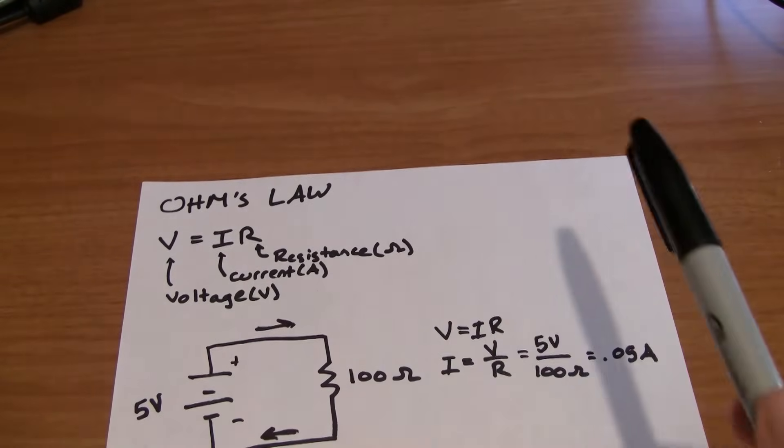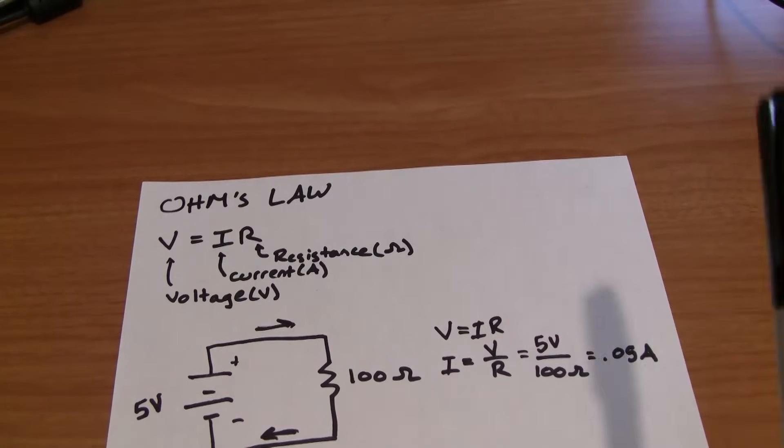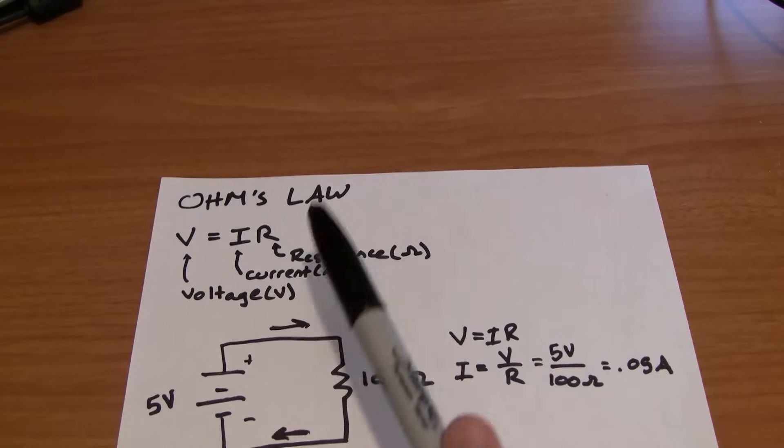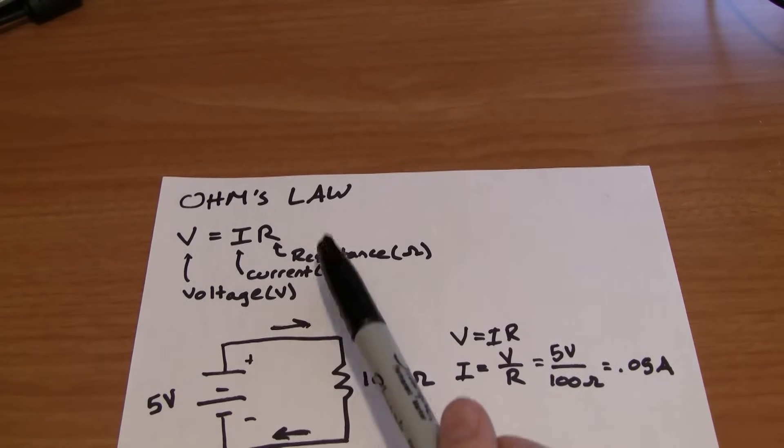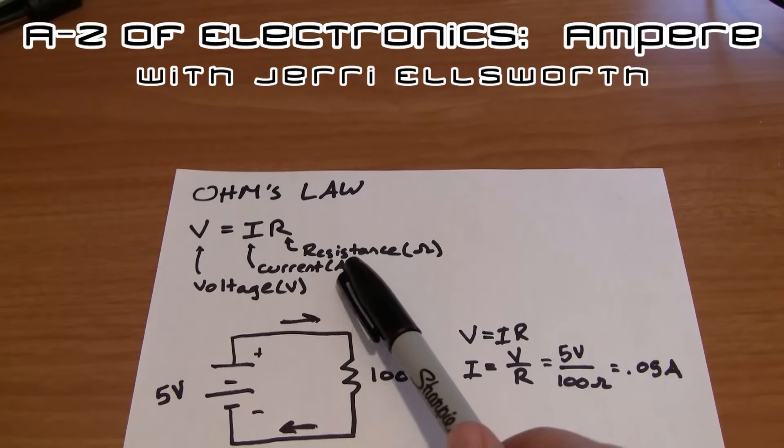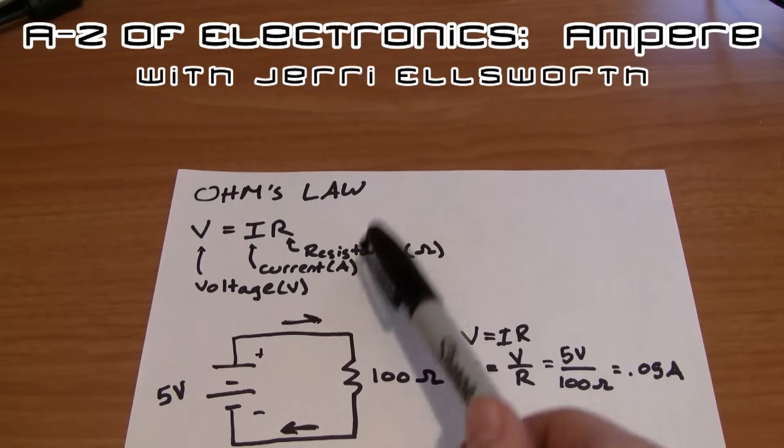Okay, let's talk Ohm's Law. Ohm's Law is probably the most important law you'll ever learn about electrical engineering. It's very simple - all it says is that voltage equals current times resistance. Resistance is measured in ohms, current in amperes or amps, and voltage in volts. If you want to learn a little bit more about current, I'll refer you to Jeri Ellsworth's video on the topic. It's really quite good.